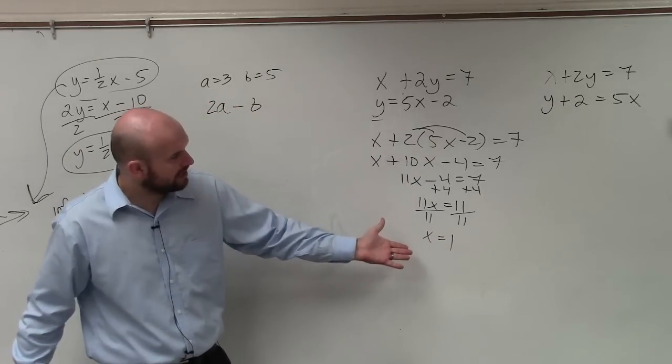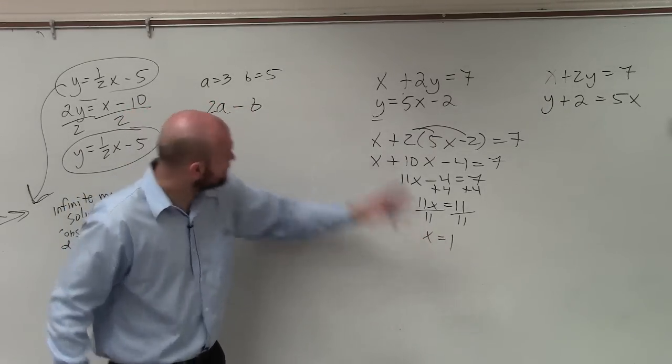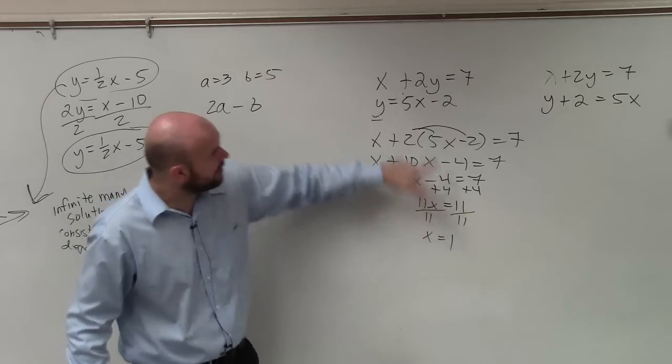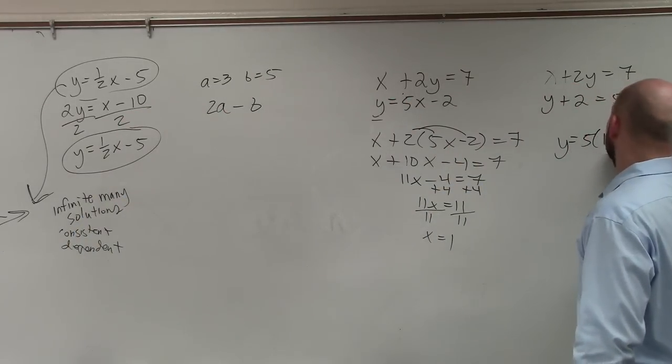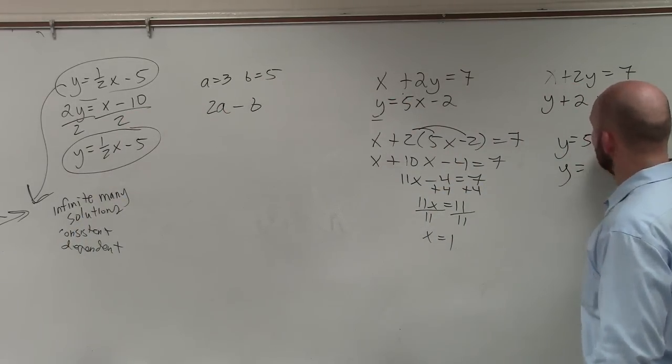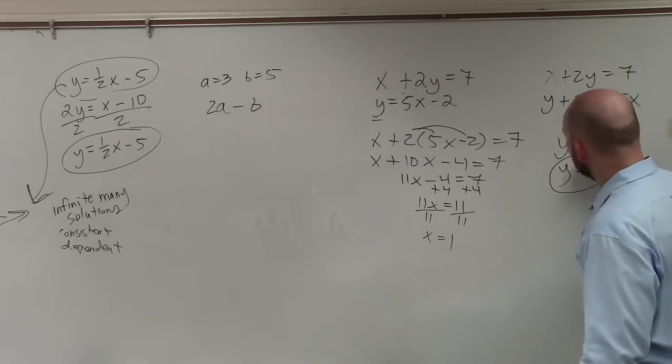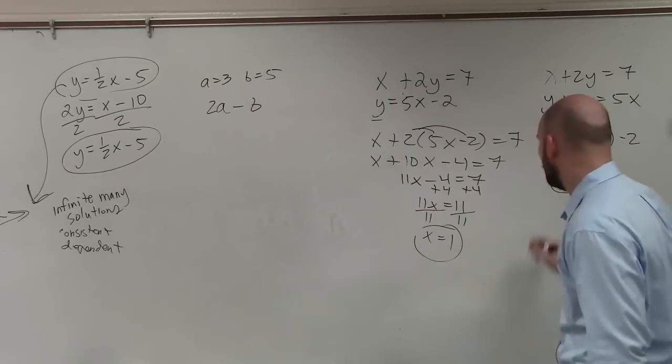Now I know x equals 1. Now I know this value, just like I did over here. I can plug 1 in for x. So I have y equals 5 times 1 minus 2. y equals 5 times 1 is 5, minus 2 is 3. So now I know the value of 3, and I know the value of 1.